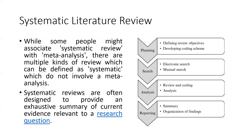Systematic reviews are often designed to provide an exhaustive summary of current evidence relevant to a research question. You can see there are four phases: planning, search, analysis, and reporting. In planning, we are defining review objectives and developing coding schemes. Search means electronic search or manual search — it depends on whether you are searching on a database like Web of Science or Scopus, or searching manually. After that, you do analysis — reviewing and coding — and finally reporting all findings as a summary and organization of results.